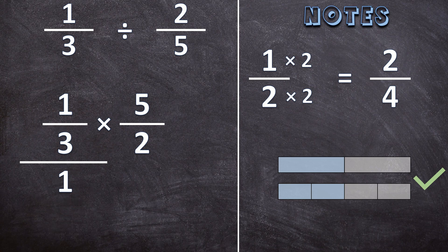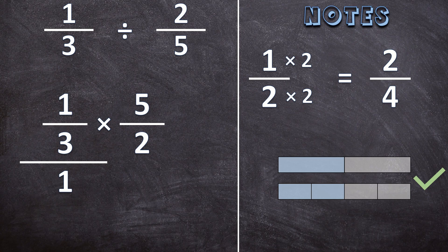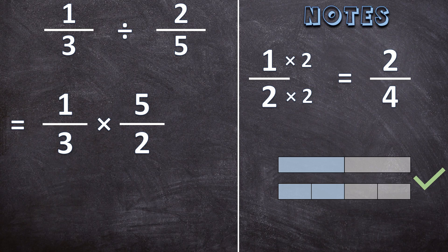And now we know anything over 1 is just itself. So we don't have to write over 1 because we know it's just going to be itself. So now we went through all the steps and let's have a look. So now we can see that 1 over 3 divided by 2 over 5 is equal to 1 over 3 times 5 over 2.